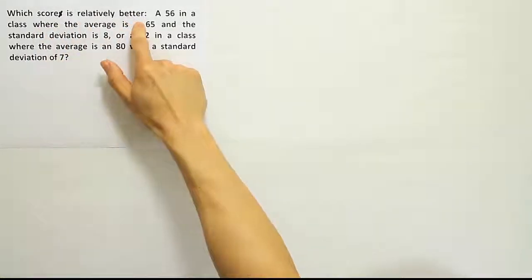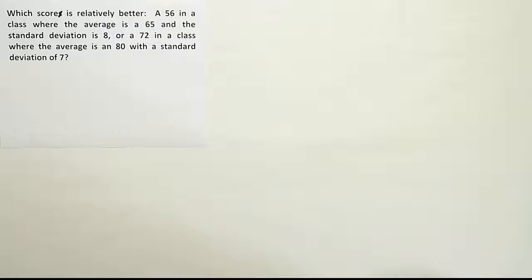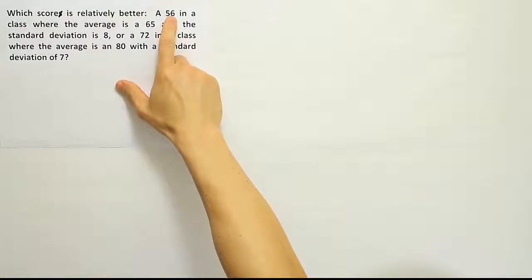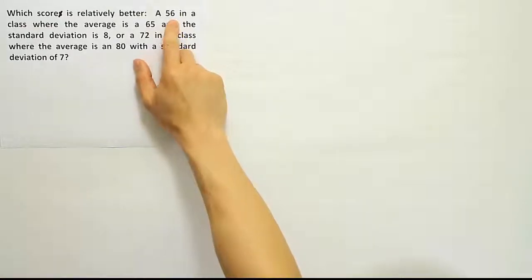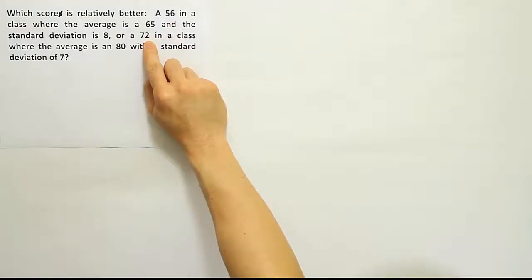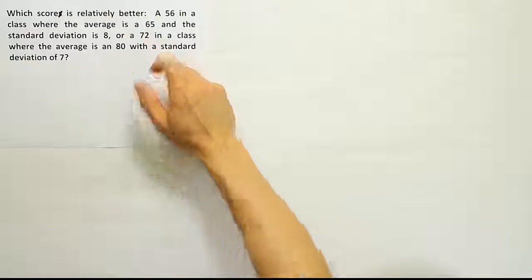When they ask us to figure out which score is relatively better, that's a common application of z-score. We want to make a comparison between these two test scores, but we want to make a comparison based on the mean and standard deviation for the group that those students took the exam with. We don't want to compare them directly because otherwise we'd say obviously a 56 is worse than a 72.